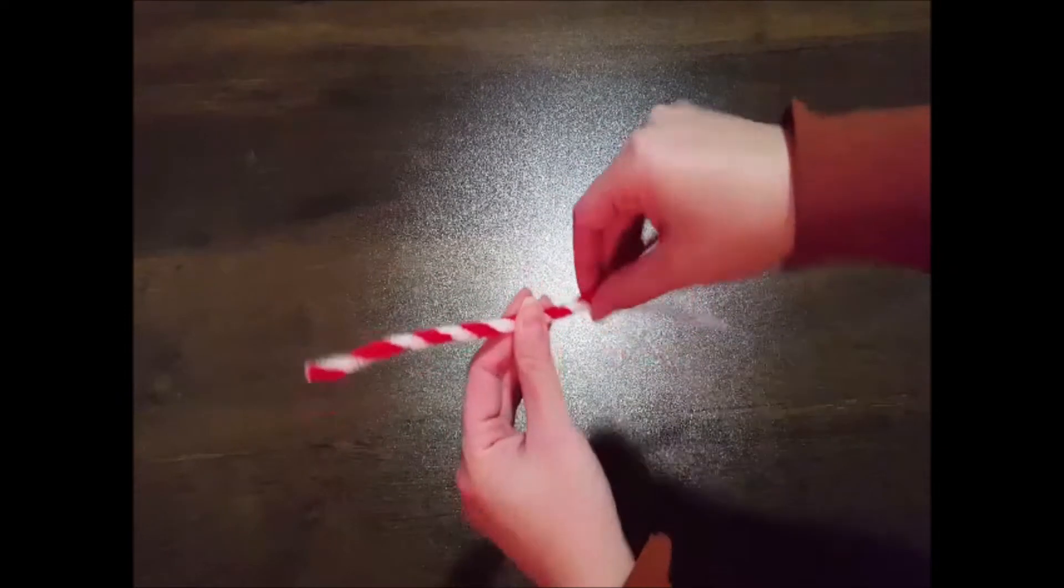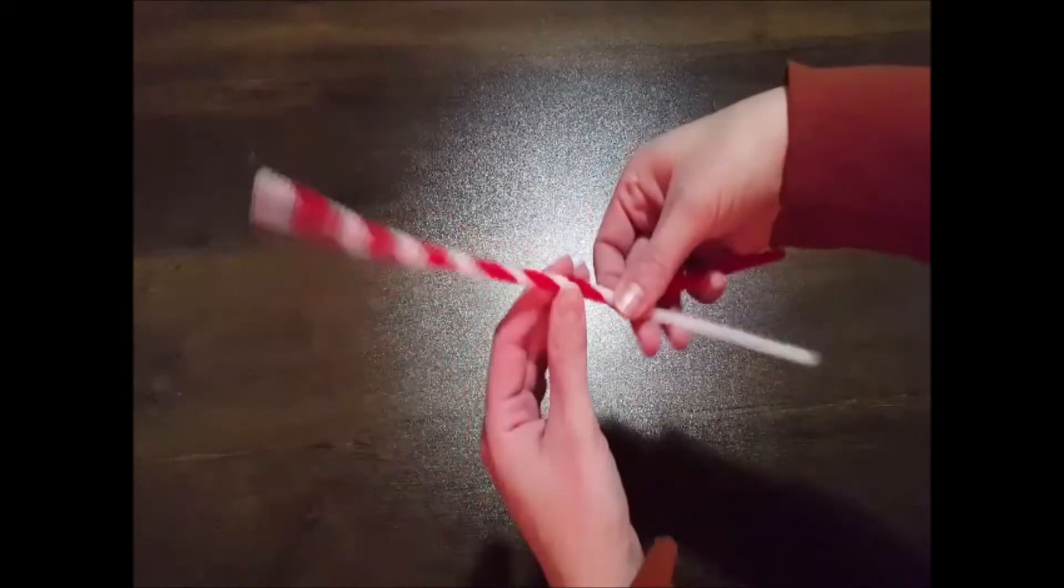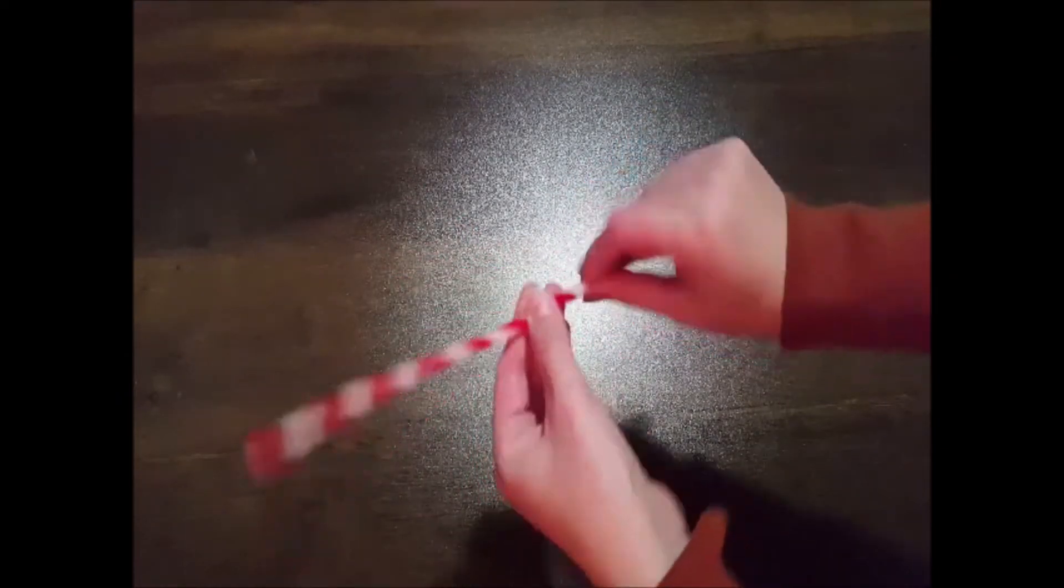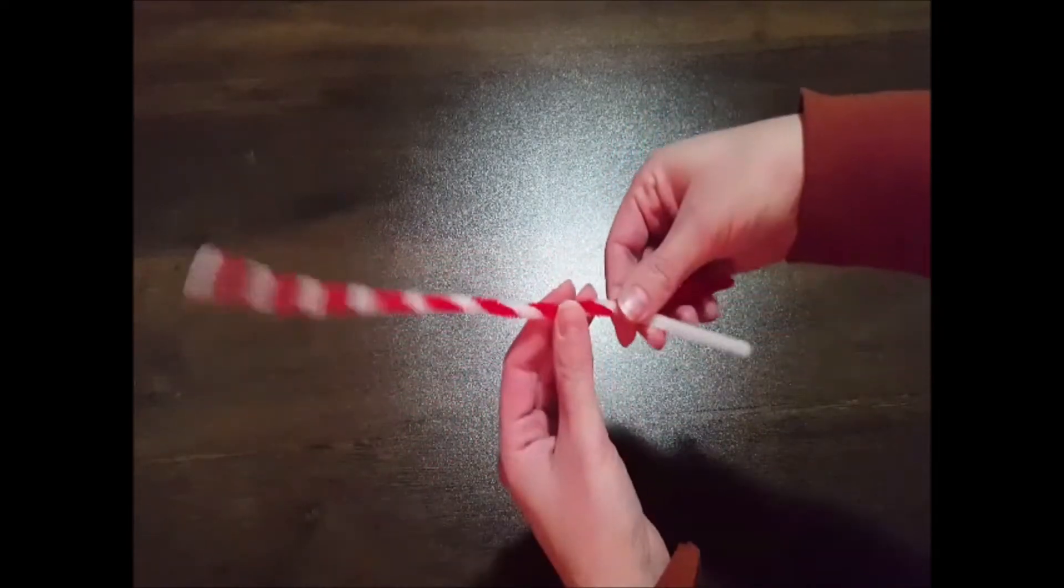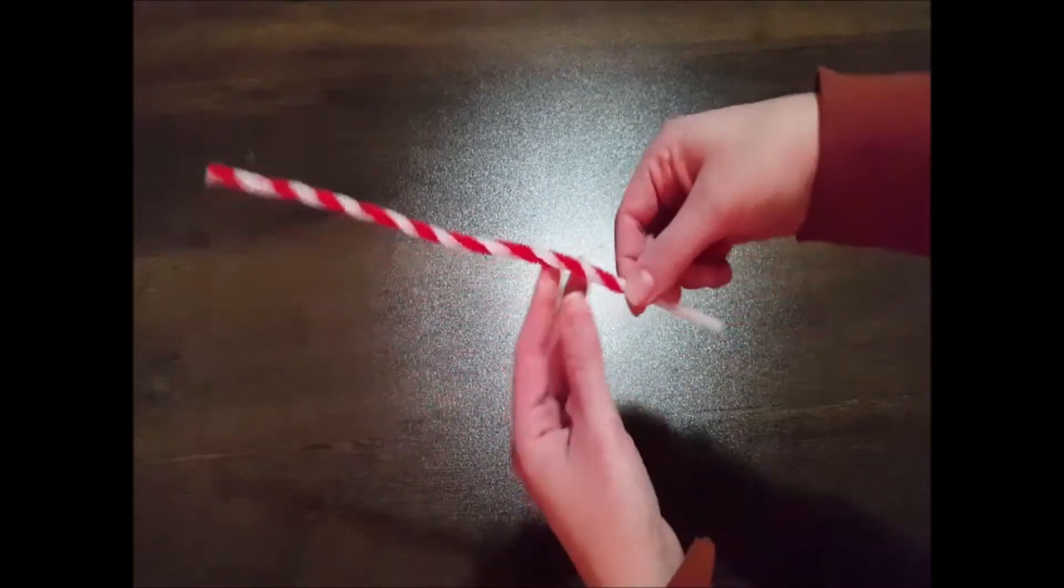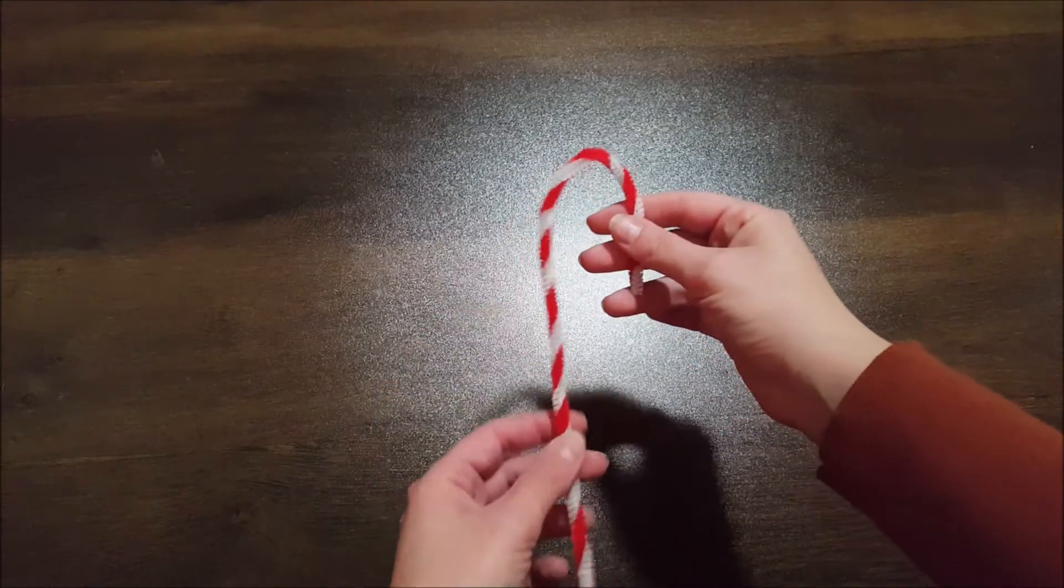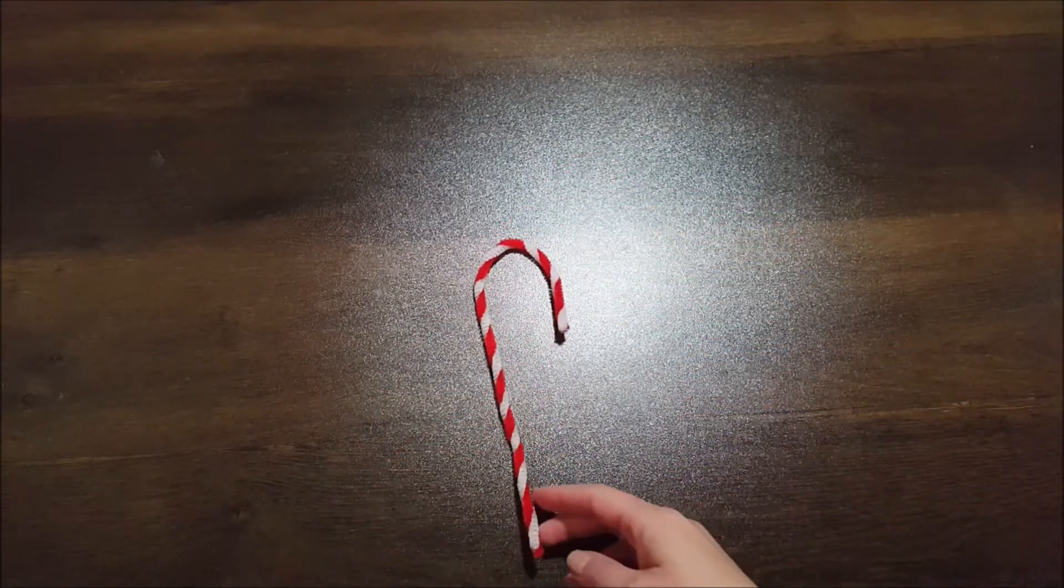And don't worry if the pipe cleaners start to twist or bend a little bit as you're going. You're going to straighten this out in the next step. In the second step, simply straighten out and shape your candy cane. There you go.